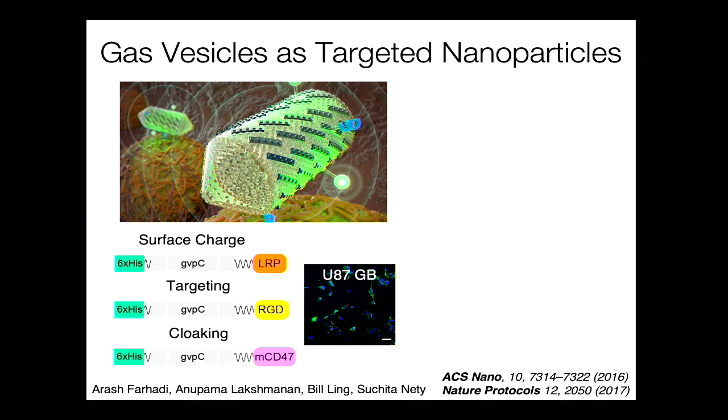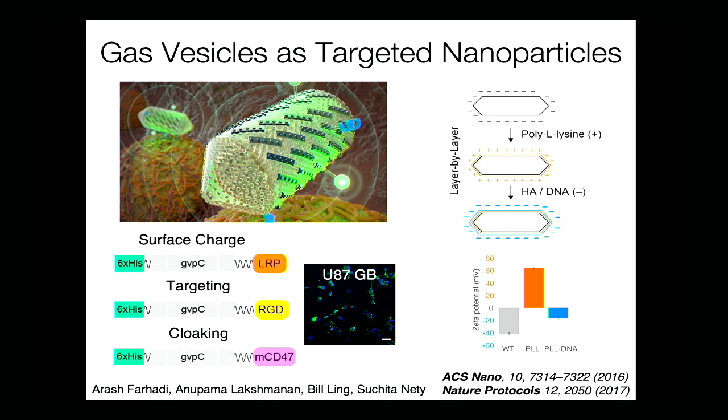While playing around with the surface protein it's kind of like playing Legos — we can attach different functionalities to that surface. We can change the surface charge, add targeting groups like RGD to go to tumor cells, create cloaking signals like the 'don't eat me' CD47 signal, and of course do chemical modifications as well.